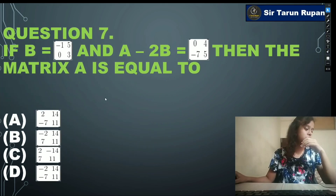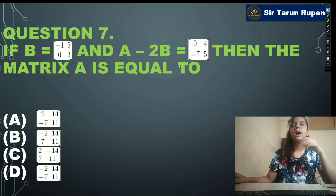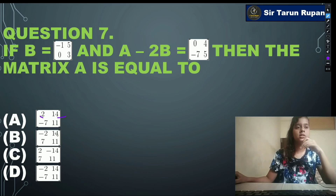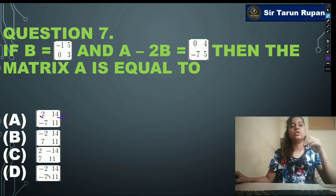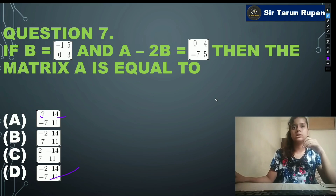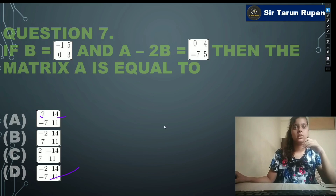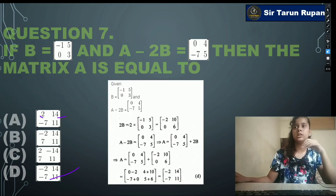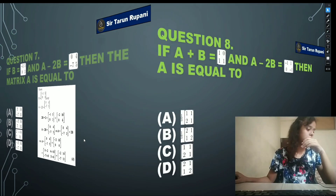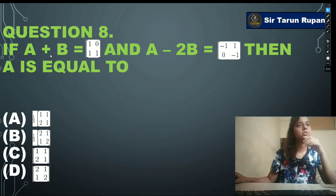Next question: if B = [-1,5;0,3] and A - 2B = [0,4;-7,5], then matrix A is equal to — option A: [2,14;-7,11], option B: [-2,14;7,11], option C: [2,-14;7,11], option D: [-2,14;-7,11]. Our correct answer is option D. You can see the solution on screen.